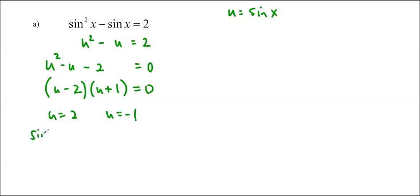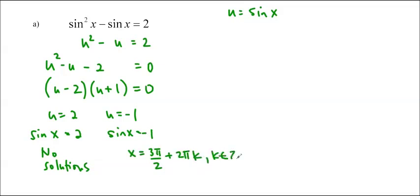And then we'd replace it again. So sin x is equal to 2 and sin x is equal to negative 1. So this one, there's no solutions because sin x can't be greater than 2, so no solutions here. But we do know that sin x is equal to negative 1 when x is equal to 3π/2. And since no range has been given, we have to do plus 2πk, k in Z.